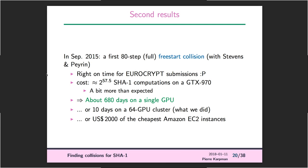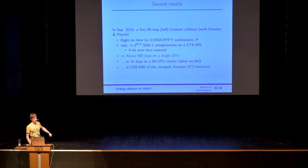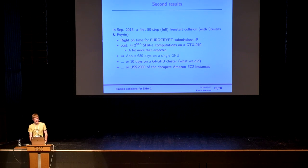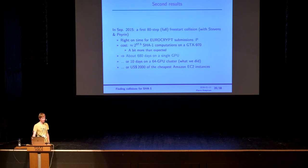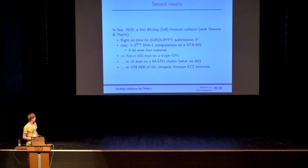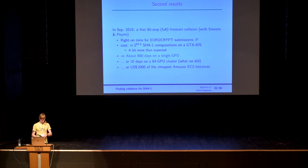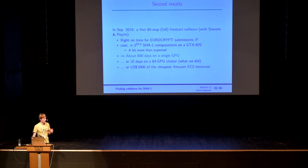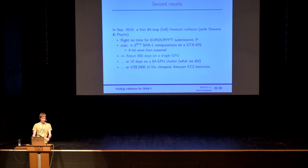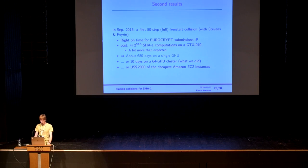This time it was a bit more expensive: 2 to the 57.5. That's about 680 days on a single GPU, or about 10 days on a 64-GPU cluster. If you want to buy the compute time on Amazon using the cheapest instances and you're a bit patient, that's only about 2,000 US dollars — an actually pretty cheap attack you could run yourself.